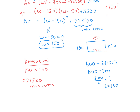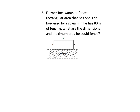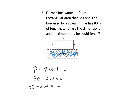Here's another one: this time we have 80 meters of fencing, but we don't need a fence on one side because there is a stream. So we only need a fence on three sides. The perimeter has two widths and one length, giving us 80 meters total. I'm going to isolate for L because it has a coefficient of one, so we won't get fractions.